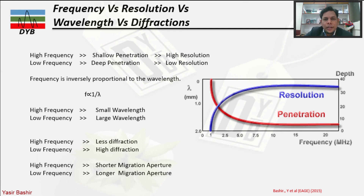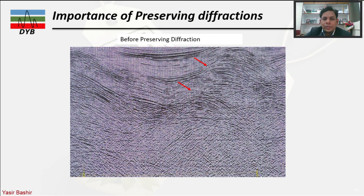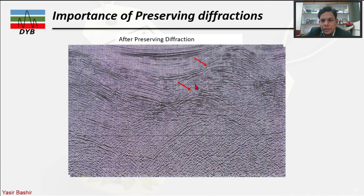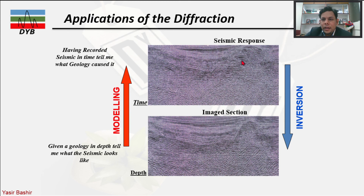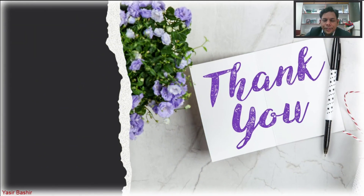A real example shows a seismic section before and after diffraction preservation. Before preservation, the flanks of the hyperbolas are not clearly visible; after preservation, the diffractions appear clearly. In the migrated data, the apex is identified and the migration moves it slightly due to the dipping reflector, as discussed in the previous lecture. This concludes the overview of seismic diffraction.